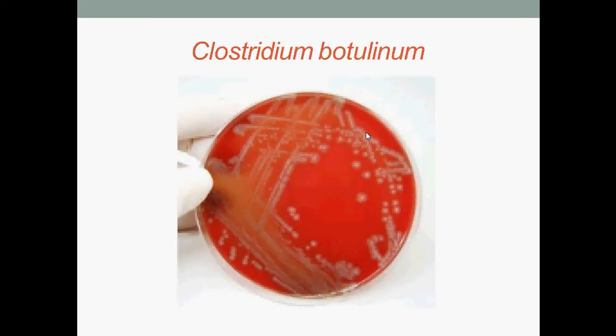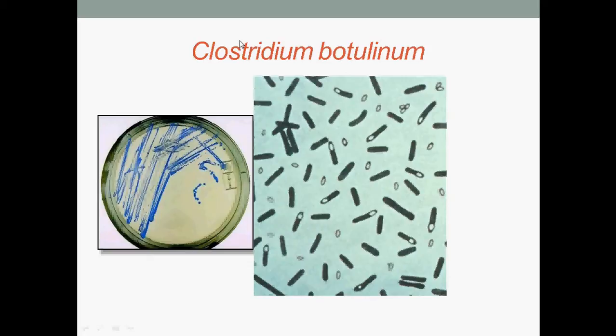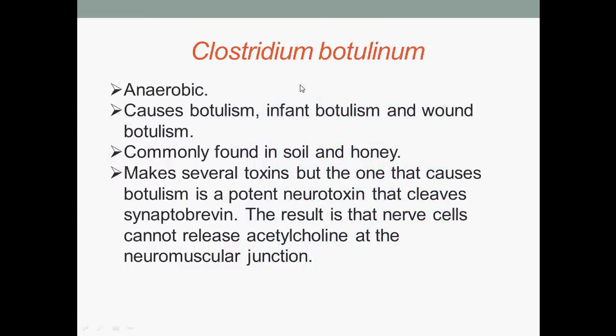Here we have colonies of Clostridium botulinum, and Clostridium botulinum under microscopic view. Clostridium botulinum are anaerobic, causing botulism, infant botulism, and wound botulism. They are commonly found in soil and honey. They make several toxins, but the one that causes botulism is a potent neurotoxin that cleaves synaptobrevin. The result is that nerve cells cannot release acetylcholine at the neuromuscular junction. Synaptobrevins are small integral membrane proteins of secretory vesicles, part of the vesicle-associated membrane protein family.